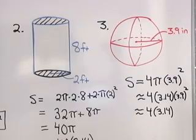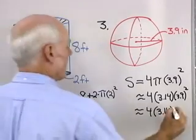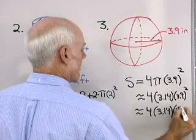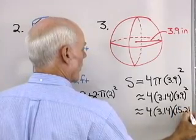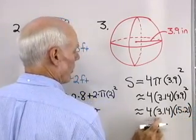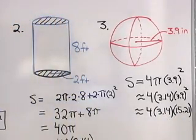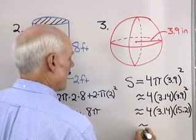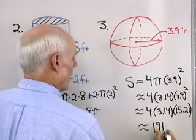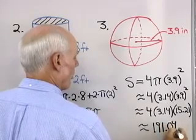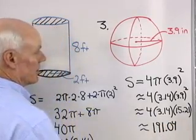I did that on a calculator. That ends up to be 15.21. Now, I'll multiply 4 times 3.14, that times 15.21. I also did that on a calculator. That ends up to be 191.04, if I round to the nearest hundredth.